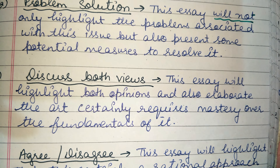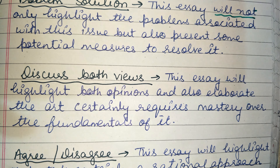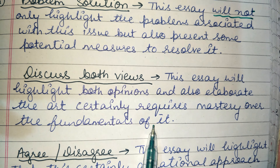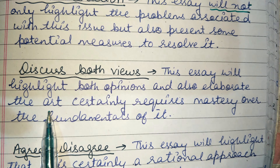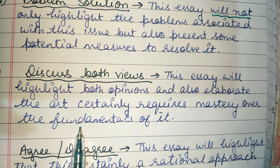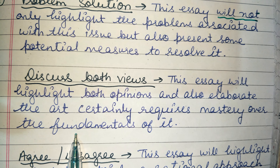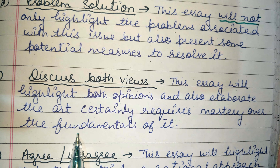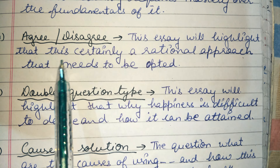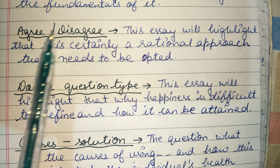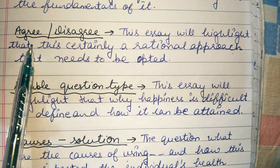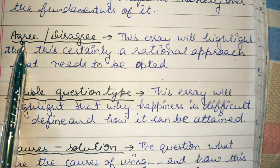Our next type is agree and disagree. In this type, the question asks 'do you agree or disagree?' and we have to go 100% to one side — either we totally agree or totally disagree with the statement.